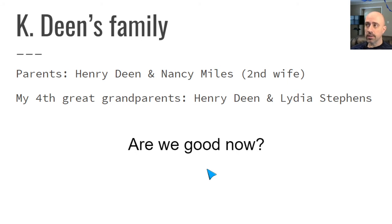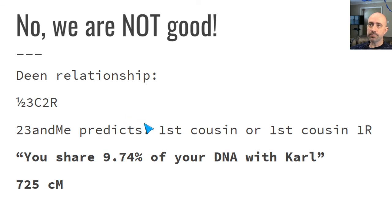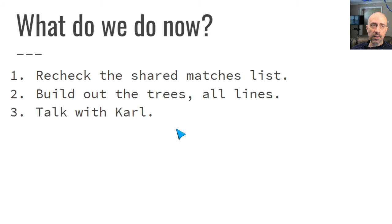The answer is emphatically no, because this Dean relationship reflects a half-third cousin two-times-removed connection. As I mentioned, 23andMe was predicting either first cousin or first cousin once removed. The amount of DNA in this relationship is far too much for the distant relationship we found in the Dean line. So although Misty is a Dean connection and Carl is a Dean connection and we share DNA with Misty, something's not right because the amount of DNA shared does not match up with the distance of that relationship. We need to recheck the shared match list, dig a little deeper, build out Carl's tree more, and talk with Carl.